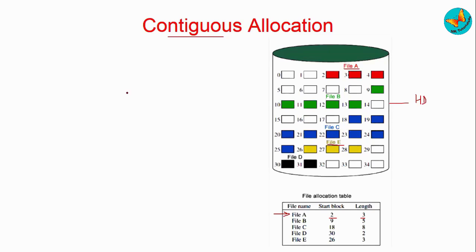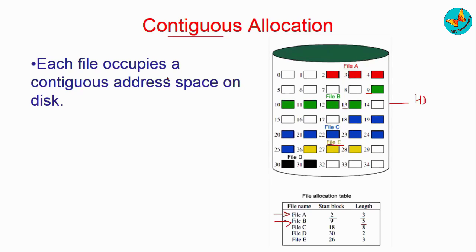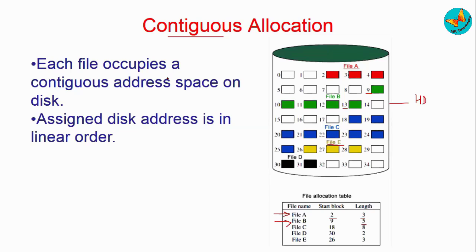Consider the second example, file B, indicated by green color. It starts from location 9 and ends at location 13, because the length is 5 — 9 plus 5 ends at that location. So contiguous allocation means each file occupies a contiguous address space on the disk; blocks are adjacent to each other, and the disk address is assigned in linear increasing order — after 2 comes 3, then 4; after 9 comes 10, then 11.